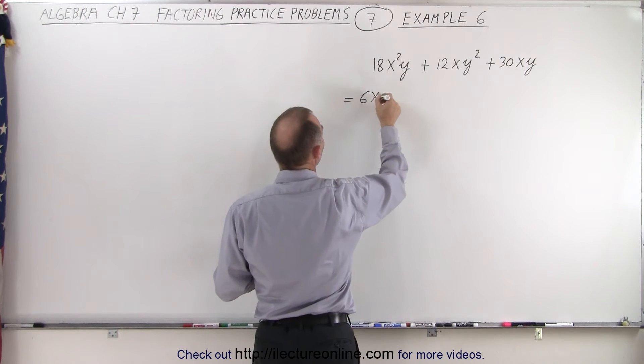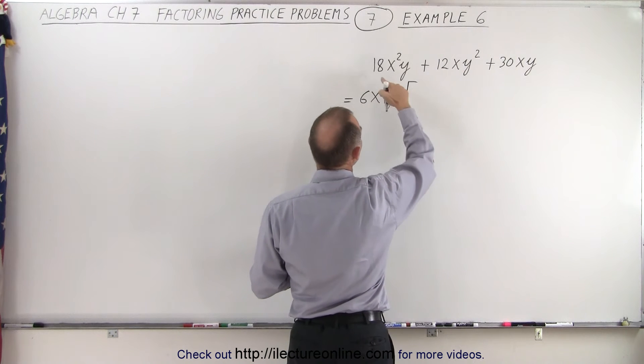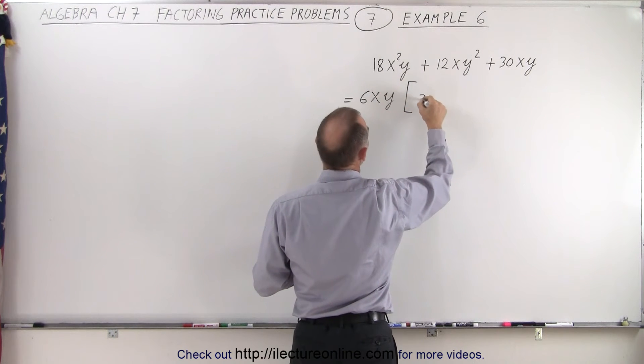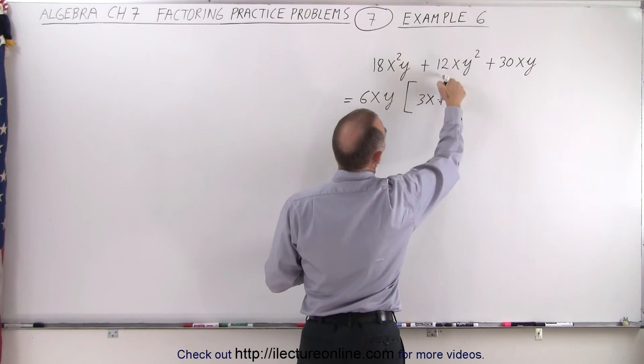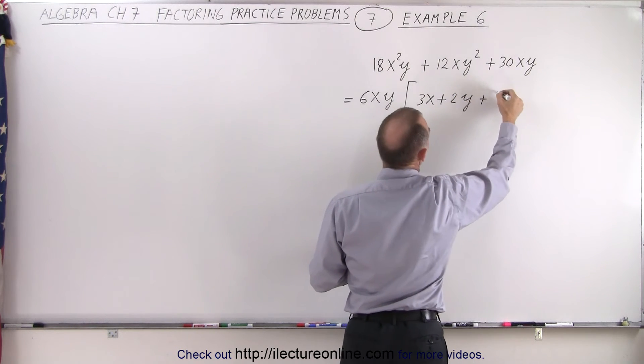So this can now be written as 6 times x times y. That looks like the common factor. And what we have remaining is, that would be a 3x plus a 2y plus a 5.